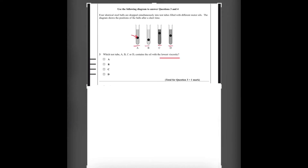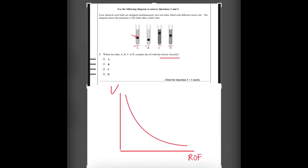Viscosity is basically the resistance to flow. A higher viscosity means higher resistance to flow, so the rate of flow decreases. If we draw a graph of viscosity against rate of flow, they are inversely proportional. When viscosity increases, resistance to flow increases, so the rate of flow decreases. So which test tube contains the oil with the lowest viscosity?